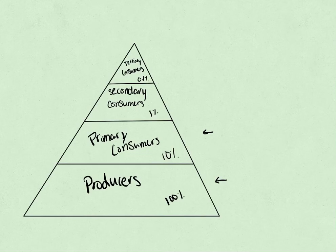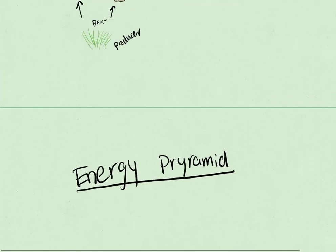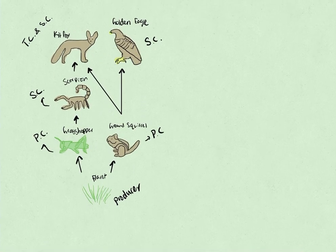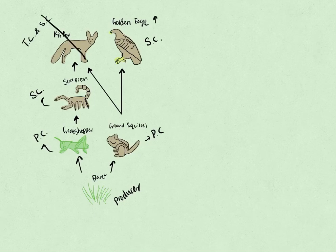Now, let's go back to the food web situation and think about what would happen if one of the organisms were to be eliminated from this food web. For example, if the kit fox were to be eliminated, we would have a rise in the golden eagle population, because there would be no competition from the kit fox for the ground squirrel. And since they were able to eat that, that would allow the golden eagle to have more prey. That's one example.